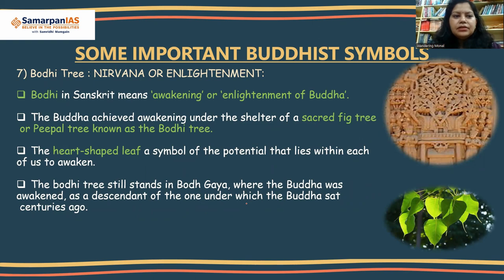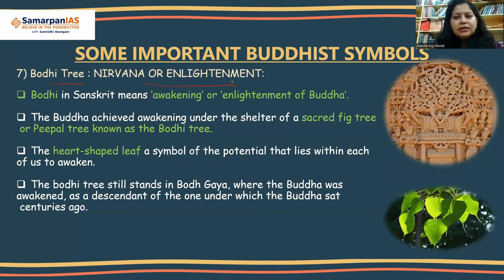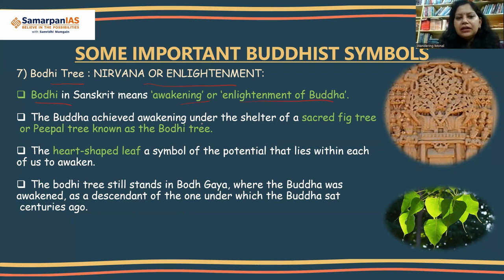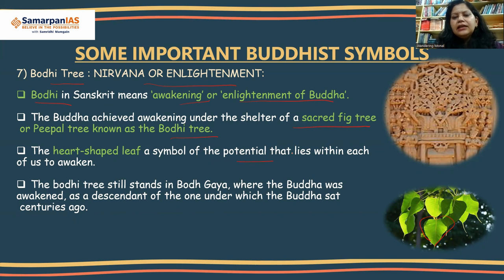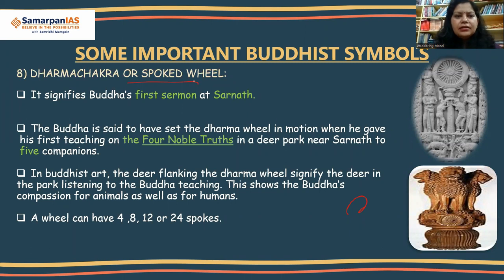The Bodhi Tree is an important symbol in Buddhism, standing for nirvana or enlightenment. Siddhartha attained enlightenment under the Bodhi Tree in Gaya, Bihar, after which he came to be known as Buddha, the enlightened one. 'Bodhi' in Sanskrit means awakening or enlightenment. Buddha achieved awakening under the sacred fig tree, also called the Peepal tree, known as the Bodhi Tree. Its heart-shaped leaf is a symbol of the potential within each of us to awaken and achieve enlightenment. The tree still stands at Bodh Gaya as a descendant of the one under which Buddha sat centuries ago.